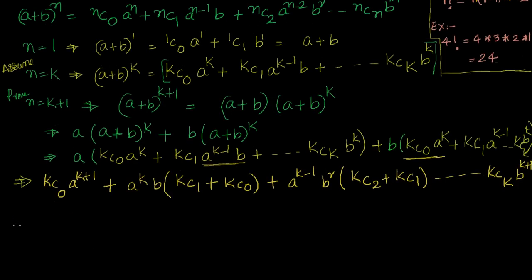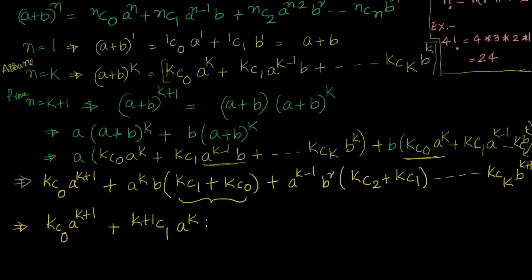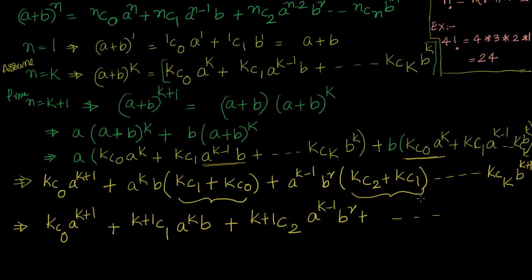Now we use a combinatorial property. This simplifies so that: the first term is a to the power of k plus 1, the second term becomes k+1C1 times a to the power of k times b, the third becomes k+1C2 times a to the power of k minus 1 times b squared, and the last term is kCk times b to the power of k plus 1.